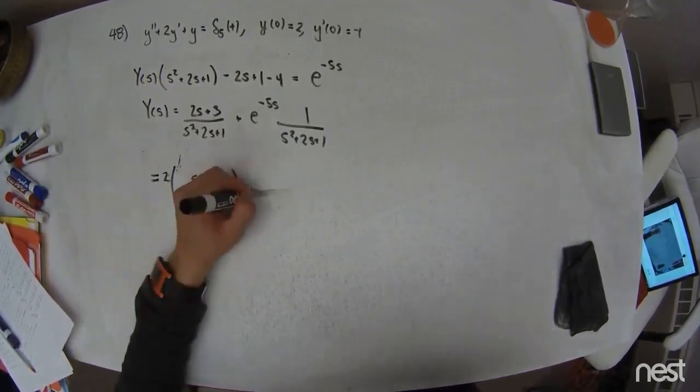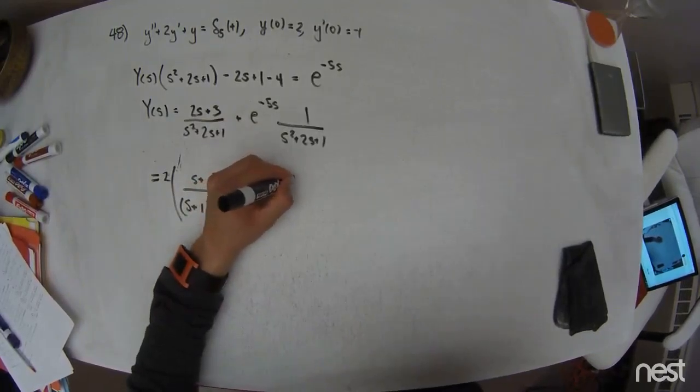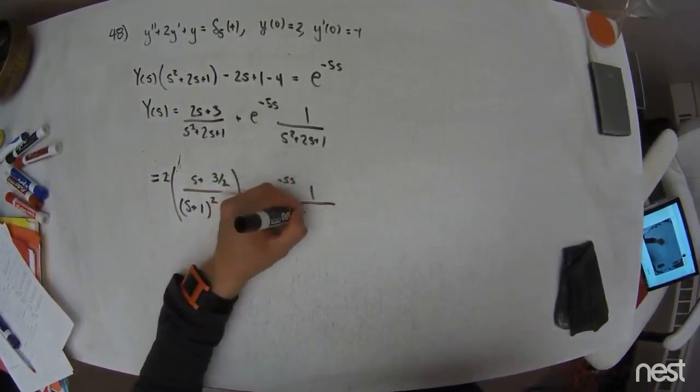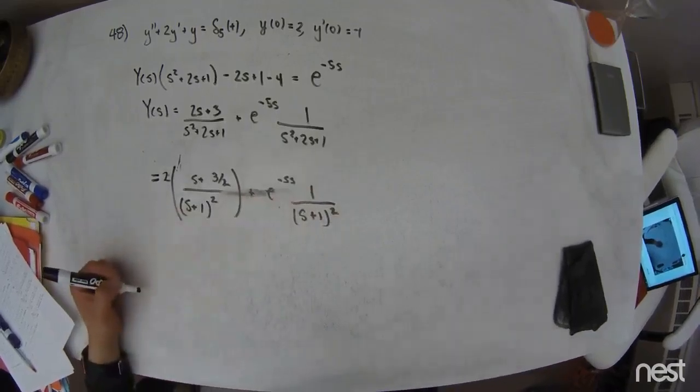So this is a repeated root problem. Plus E to the negative 5S times 1 over S plus 1 of quantity squared.